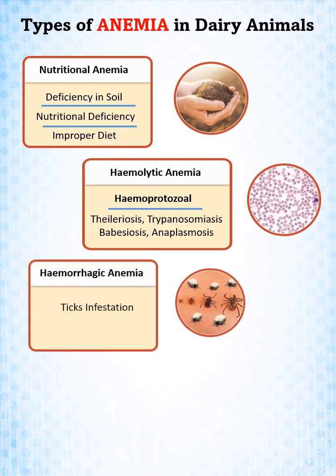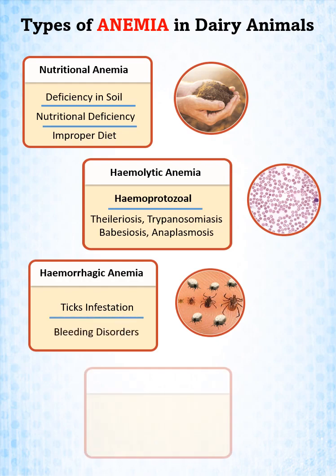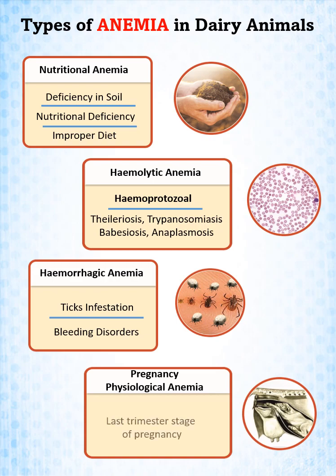Hemorrhagic anemia is due to tick infestation and bleeding disorders. Pregnancy physiological anemia is more prone in the last trimester stage of pregnancy.